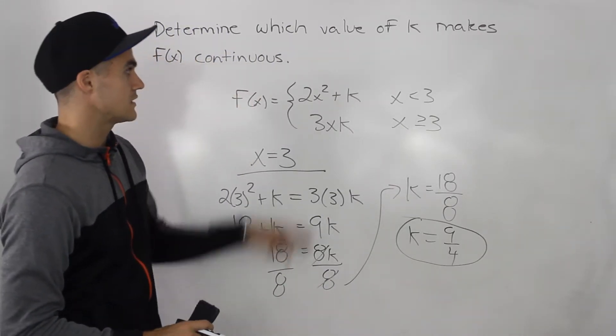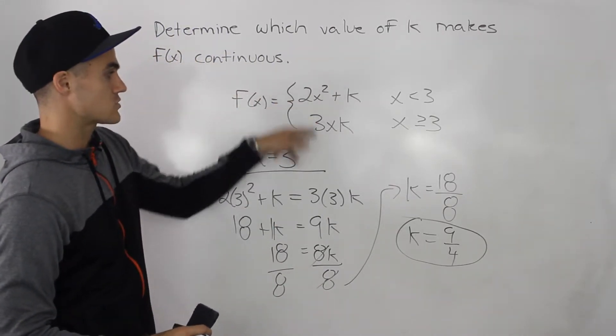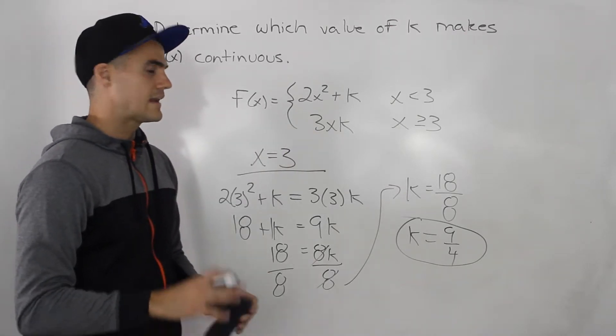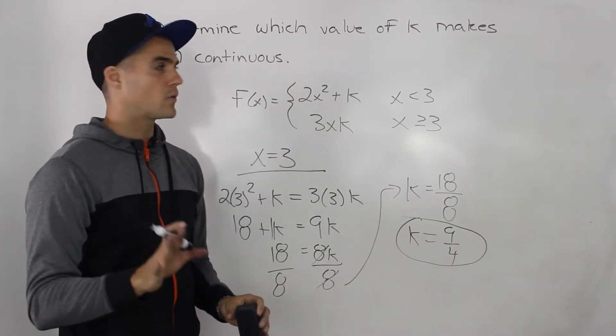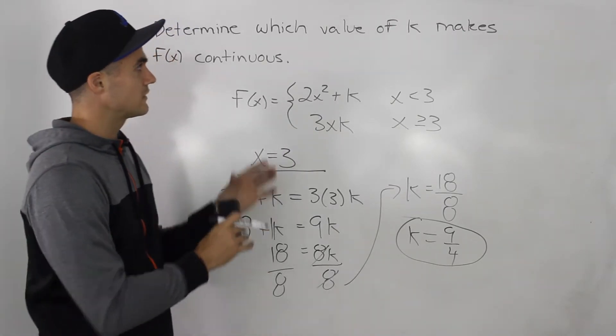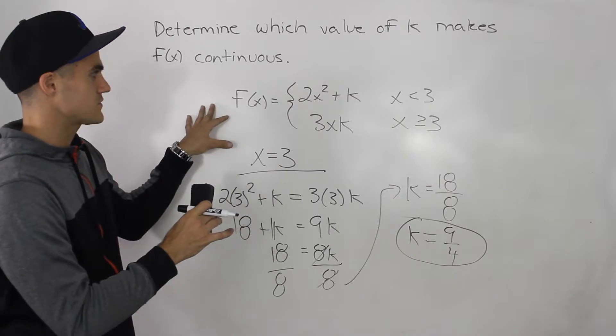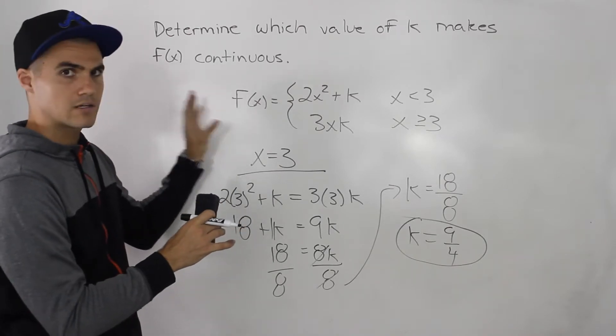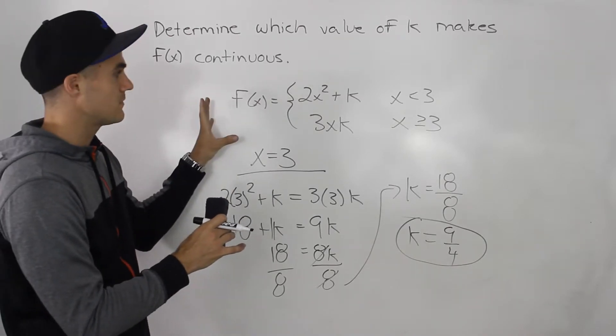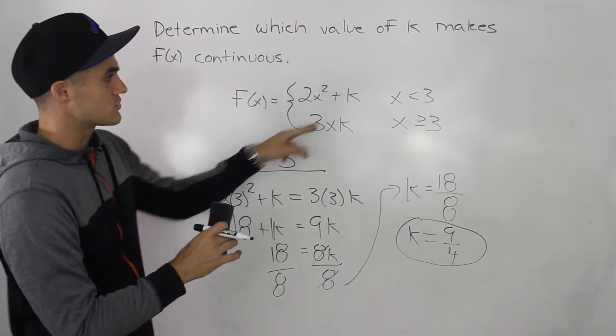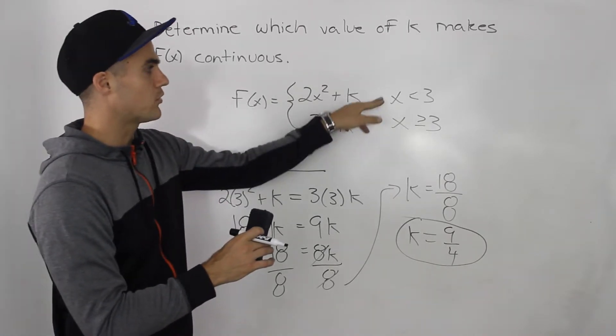Basically, the y-values at those meeting points have to equal. This particular question where you're finding constants in a piecewise function was a little bit easier, because there's only one meeting point.